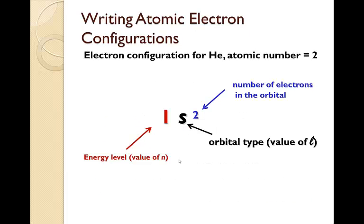When we're writing the electron configuration, we need to signify the energy level, which is n, the orbital type, which is ℓ, and the number of electrons.